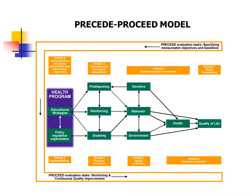Here's a diagram of the PRECEDE-PROCEED model. Interestingly, we start at the top in the orange boxes and go from right to left, then circle down to the bottom and go from left to right. That represents the eight phases of the PRECEDE-PROCEED model. The phases are: first, the social assessment; then the epidemiological assessment; then looking at causes; then the administrative and policy phase; then implementation; followed by three phases of evaluation.